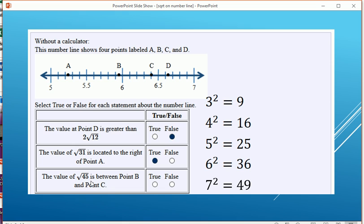Then the last one, square root of 45. It's between 6 squared and 7 squared but closer to 7 squared, so not here. Closer to 7 squared. Is it between point B and point C? It is not between those two numbers.